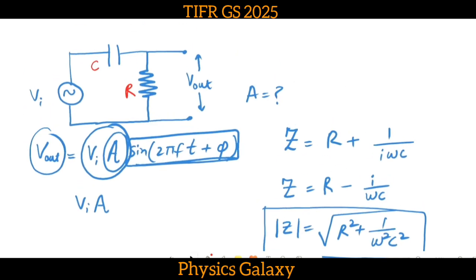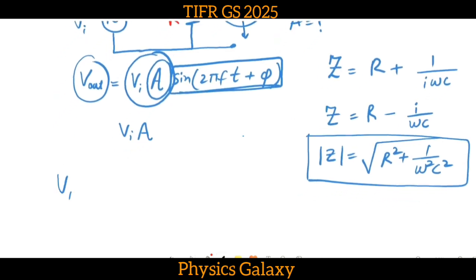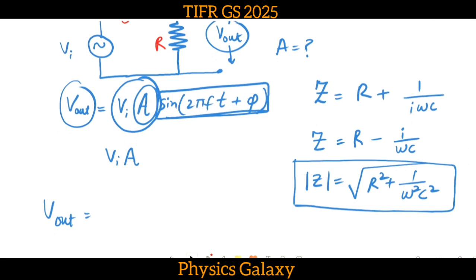What we will do is find the voltage V_out. V_out will be simply given by V_i times R divided by the magnitude of Z.